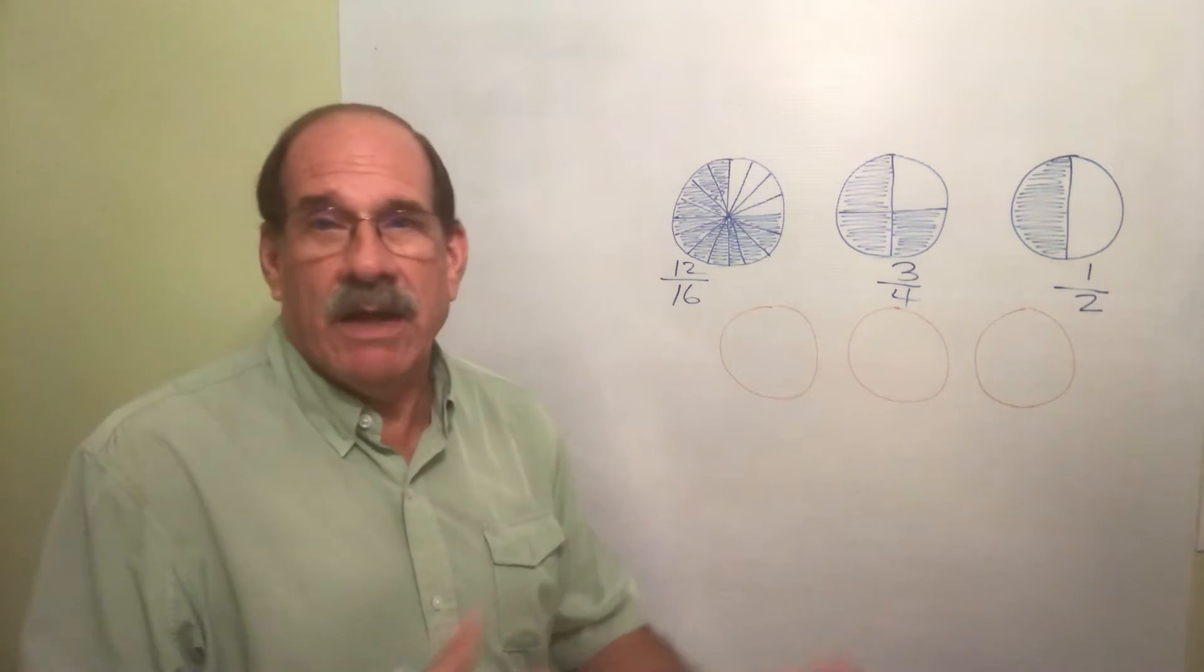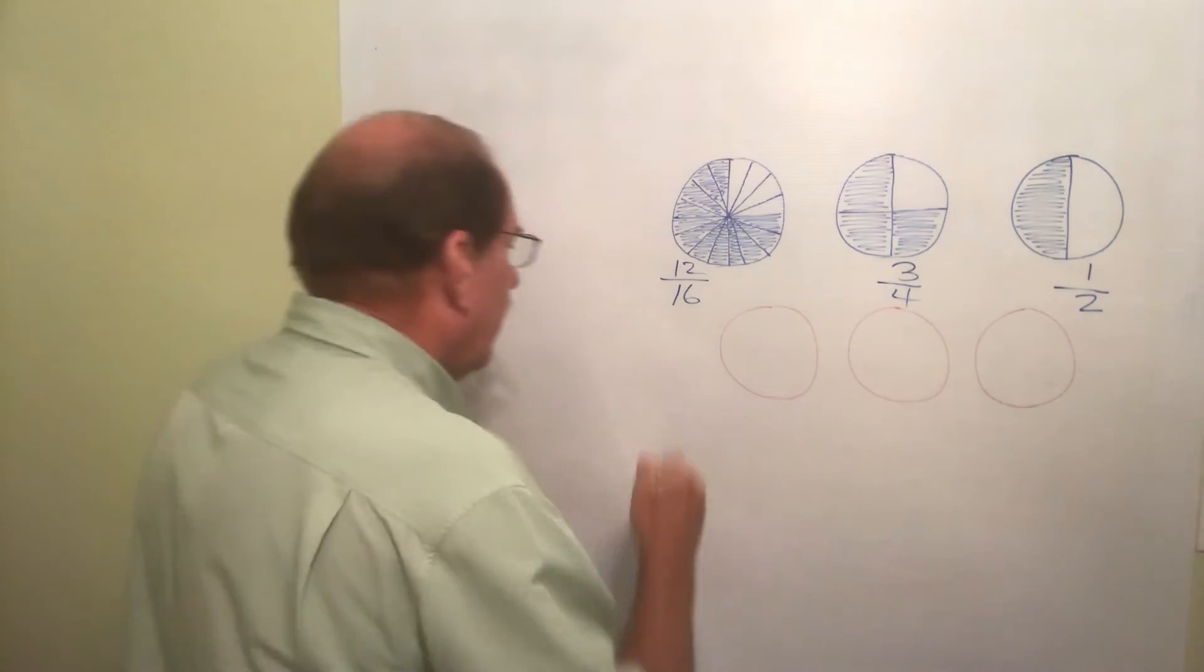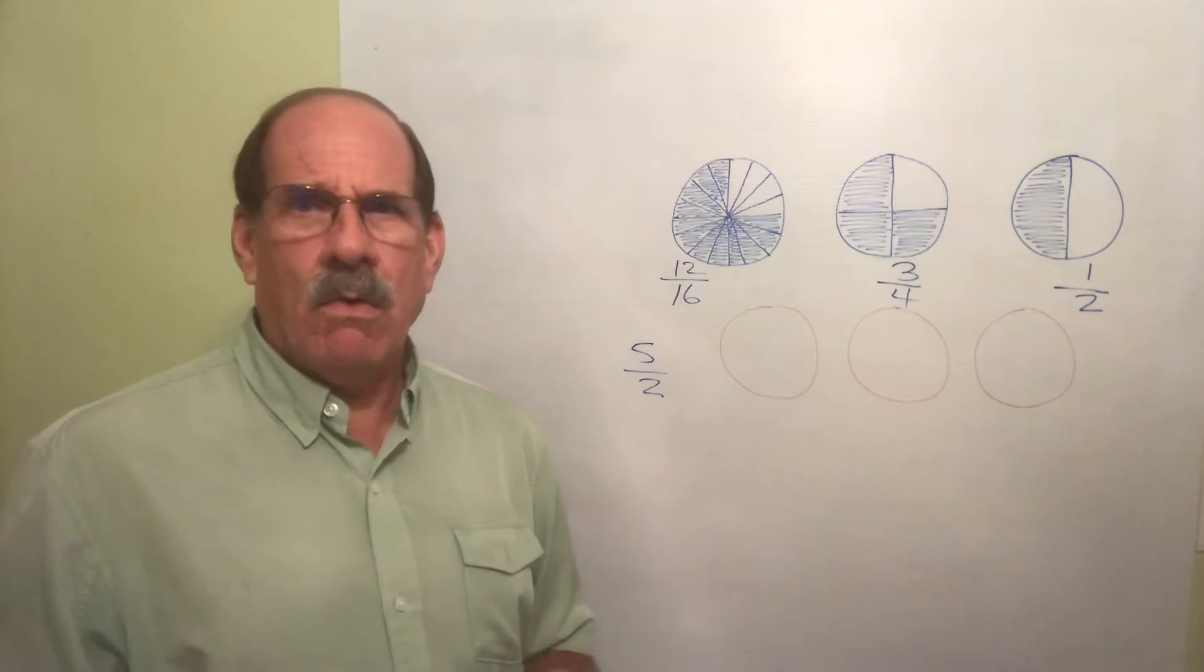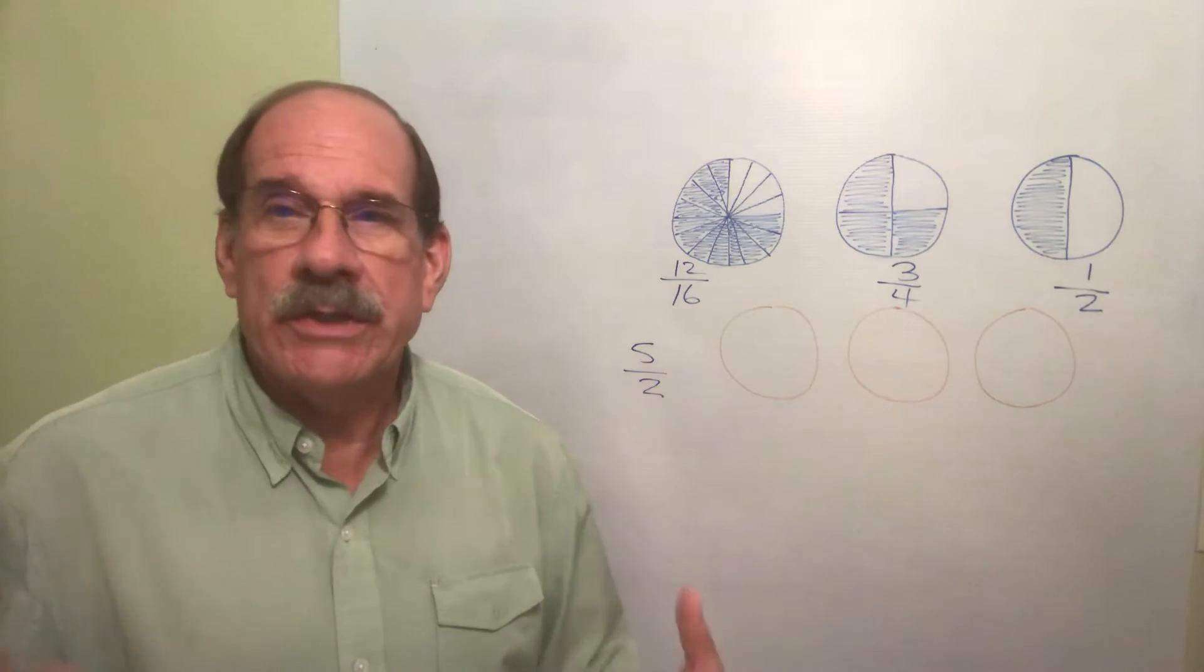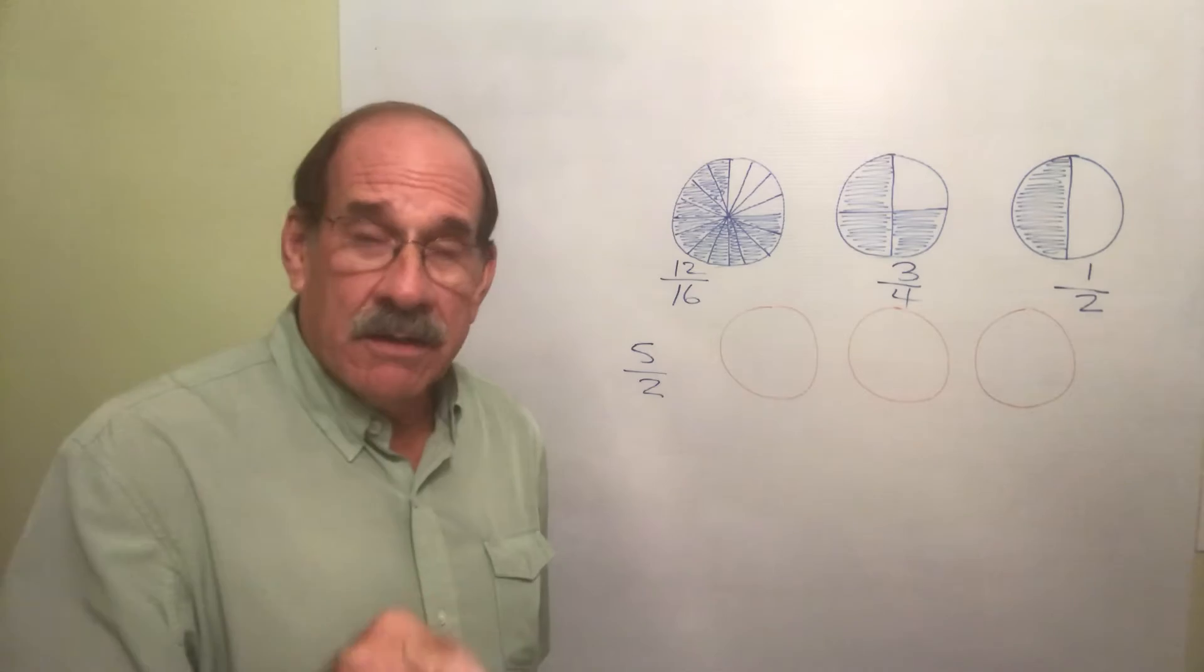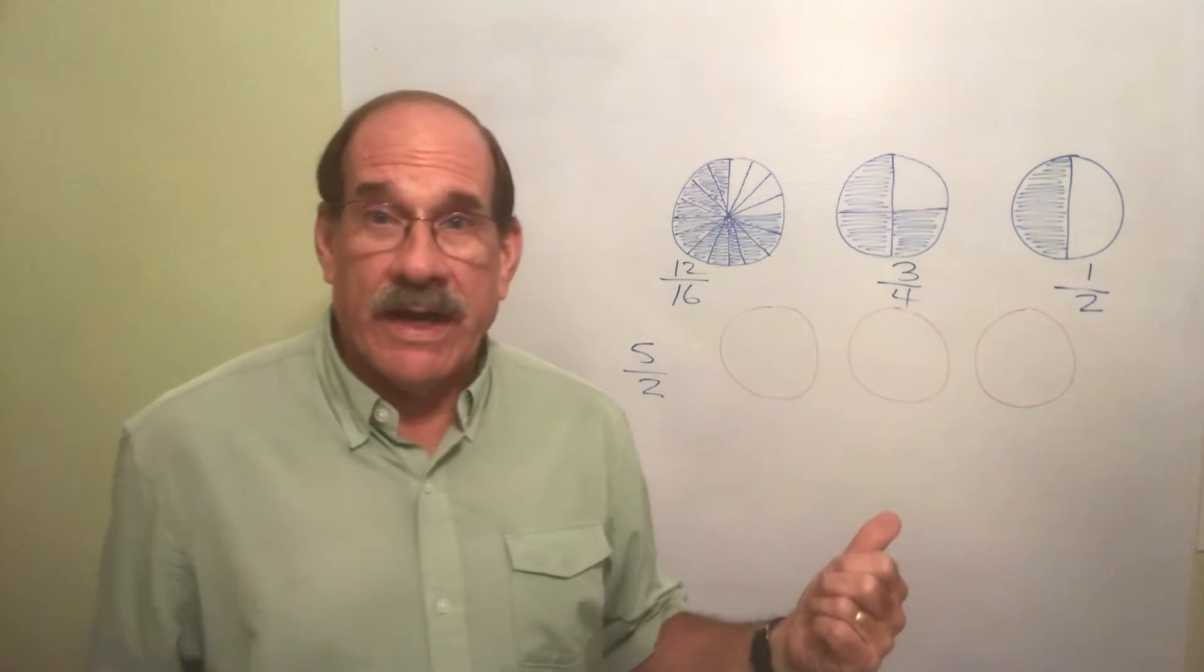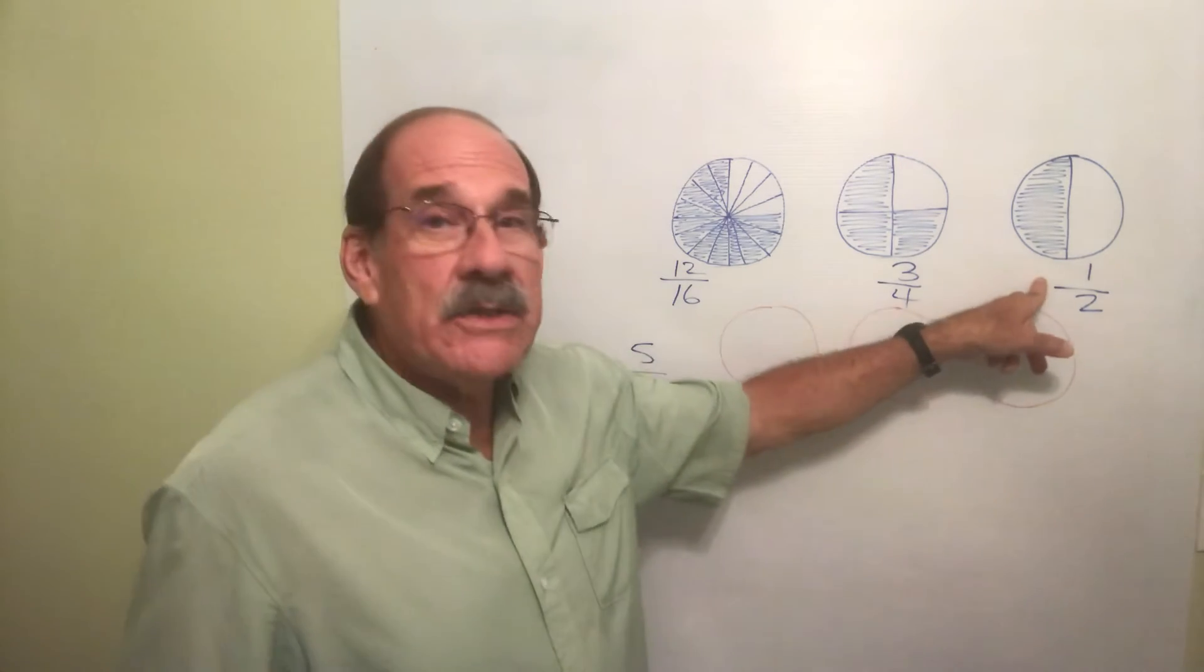That's all a fraction is - you tell how many you get out of how many total equally sized pieces that you've got. But what if I have something like this - I have five halves of a pizza? Whoa.